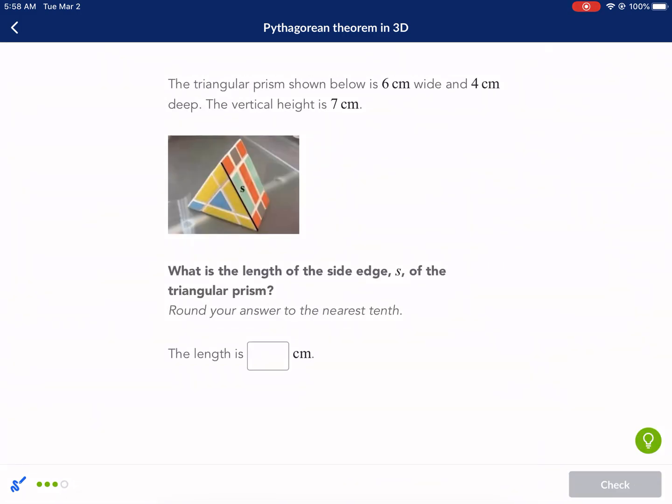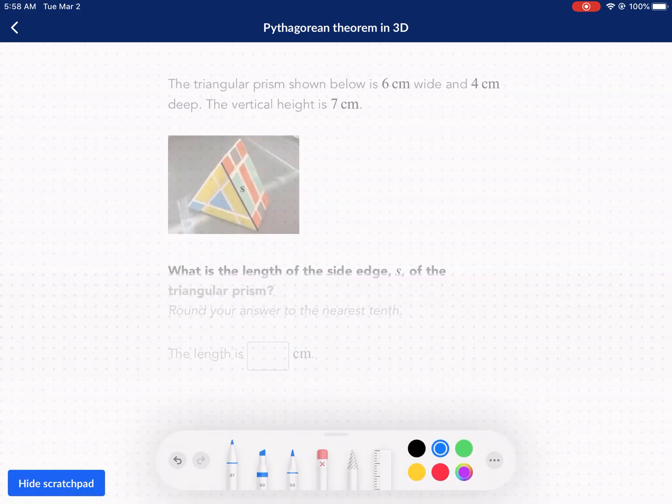All right, next question. The triangular prism shown below is six centimeters wide and four centimeters deep. The vertical height is seven centimeters. What is the length of the side s of the triangular prism? Okay, so let's try to break this down. I'm not really sure what these dimensions are. The triangular prism shown below is six centimeters wide. So I think they mean, okay, I think they're saying this is the deep part. So that's four. And then I think they're saying the vertical height is seven right there. That's seven. And I think they're saying this distance right there is six. Okay, so it gives us a lot of information, and we don't need all of it.